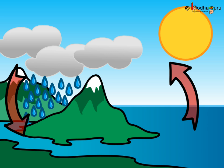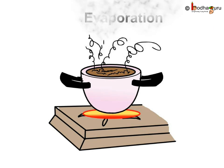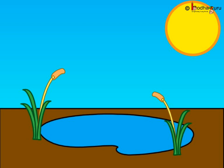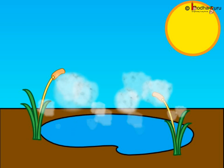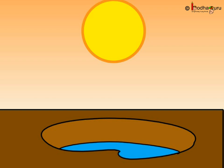Have you ever wondered how does it rain or what causes rain? First let us understand two processes: evaporation and condensation. When your mother boils water, it changes into steam or water vapor. This changing of water into water vapor or steam is called evaporation. Have you observed a puddle of water dries by itself after a few days? Due to the heat of the sun, evaporation from all water bodies like sea, river, lake and even puddles goes on all the time, and hence the puddle of water eventually dries up.